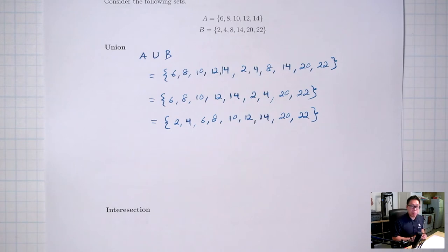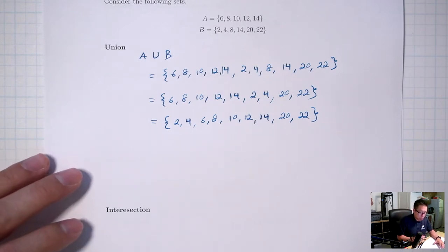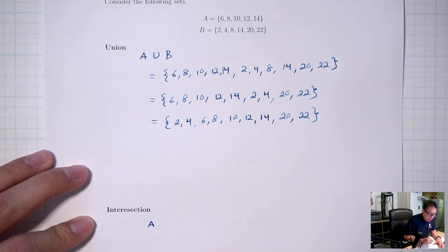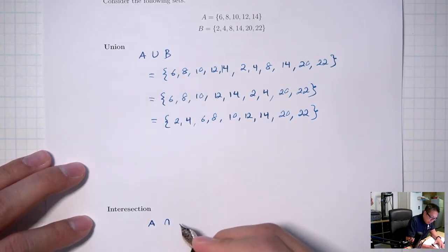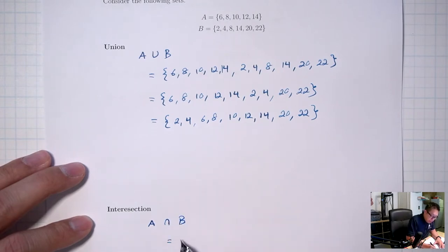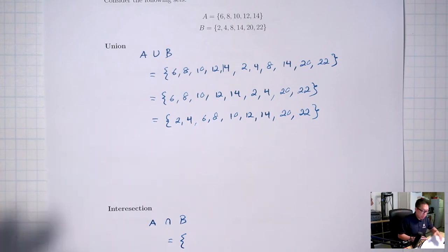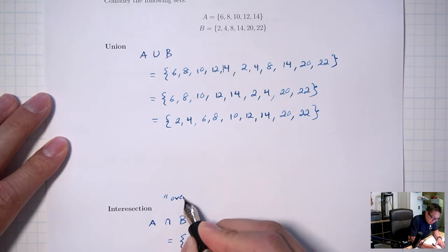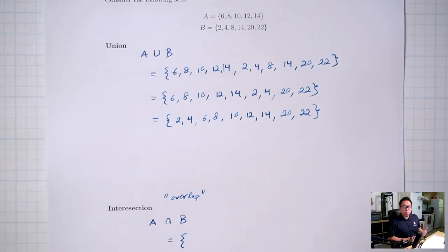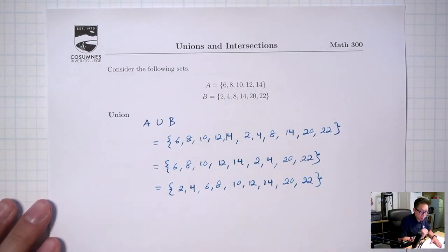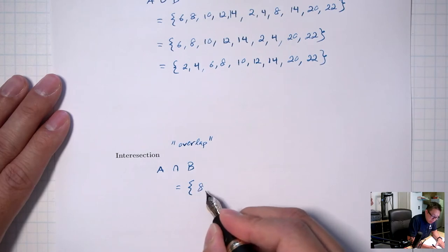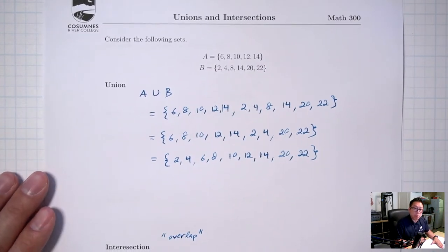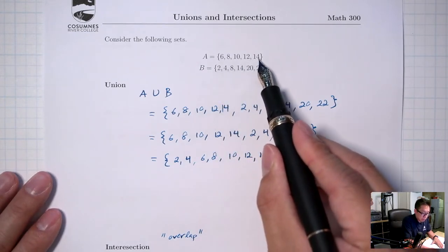The next concept is called the intersection. Notation-wise, the way you write it out is the first set, and the notation for intersection is going to be not a U but an upside-down U, and then the second set. Think of the intersection as the overlap — in other words, what numbers are in both sets at the same time? 8 is in A and also in B, so 8 is in the intersection. 14 is in both sets at the same time, so 14 is in the intersection.